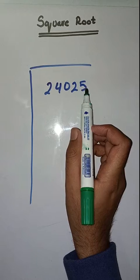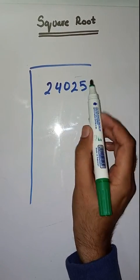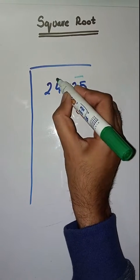So what will we do? First, we will make pairs from right to left like this: 25, 40, and 2.